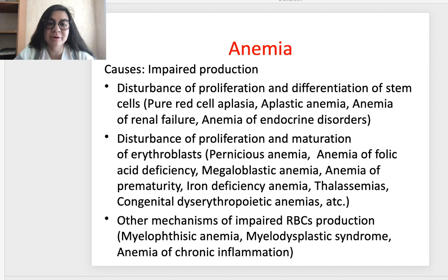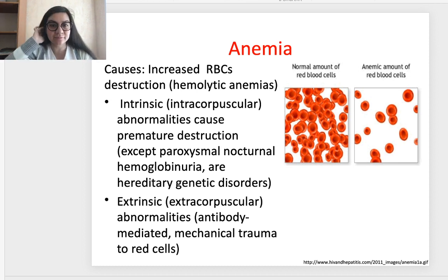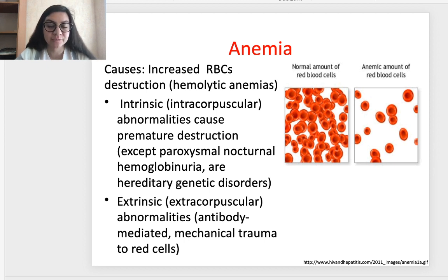Other mechanisms of impaired red blood cell production include megaloblastic anemia and anemia of chronic inflammation. Another category is normal production but increased red blood cell destruction, also called hemolytic anemias. These can be intrinsic or intracorpuscular — due to abnormalities causing premature destruction — and all except paroxysmal nocturnal hemoglobinuria are hereditary genetic disorders.